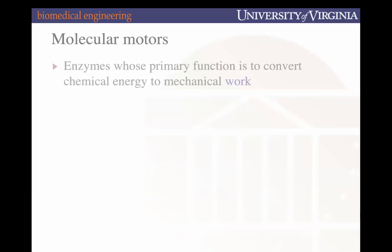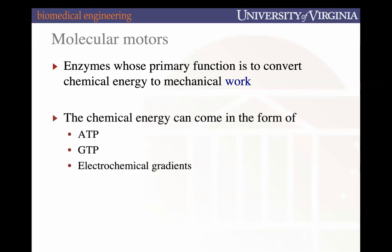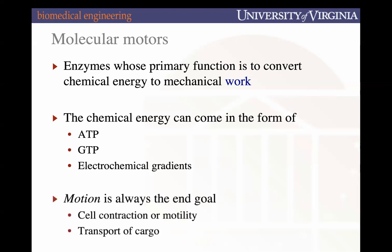Molecular motors are primarily enzymes whose primary function is to take chemical energy and transform it into mechanical work. You can think of them as transducers — taking one form of energy and transforming it into another: chemical to mechanical. Typically the chemical energy comes in the form of ATP, GTP, or some electrochemical gradient. For today's lecture we'll focus primarily on ATP. Motion is always the end goal — whether it's cell contraction or cargo transport.